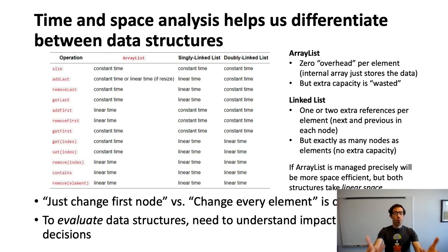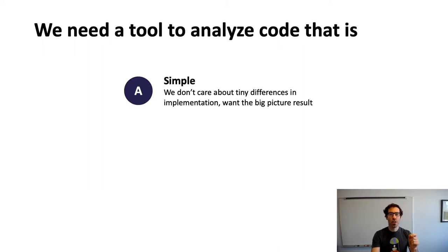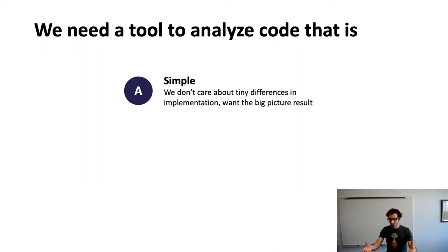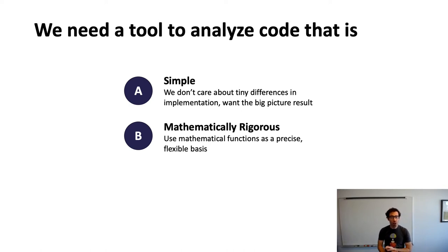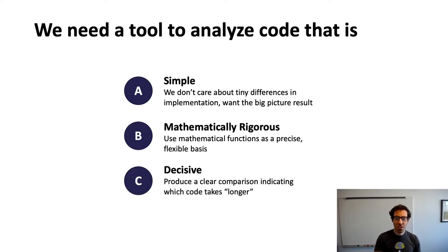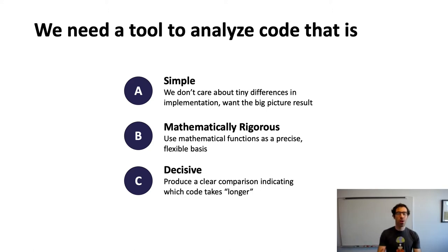This is what we've looked at so far in terms of analyzing data structures. What we want is a tool that is simple — we don't care about tiny differences in implementation, we want the big picture. We want something mathematically rigorous, more precise than just saying constant time or linear time. And finally, we want something decisive that makes it clear when we compare data structures whether they are in the same category of efficiency or different ones.